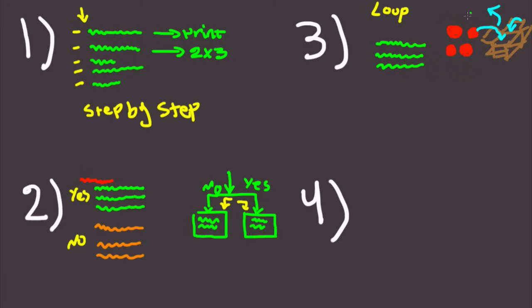With loops, we write the instructions once — open the box, put the apple in, close the box — and then repeat the process as many times as we want. We can set a condition like 'as long as apples exist, do the process,' or simply say 'do the process one thousand or one million times.' Loops allow us to execute a set of instructions as many times as we want, showing the true power of computer science at large scale.